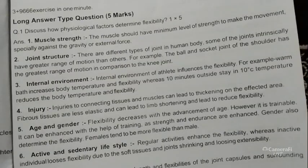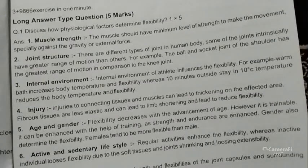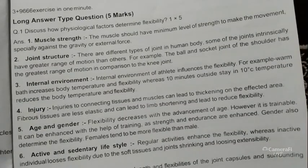Injuries to connective tissues and muscles can lead to thickening on the affected area. Fibrous tissues are less elastic and can lead to limb shortening and reduced flexibility. Age and gender: flexibility decreases with advancement of age; however, it is trainable and can be enhanced with the help of training, as strength and endurance are enhanced. Females tend to be more flexible than males.